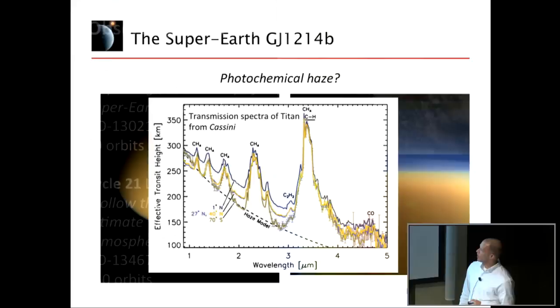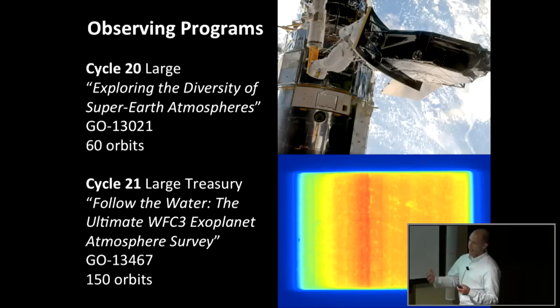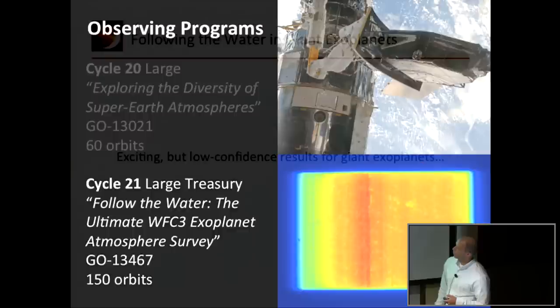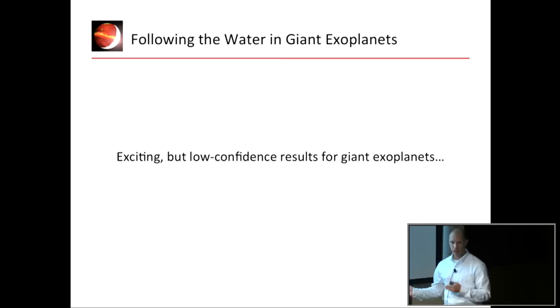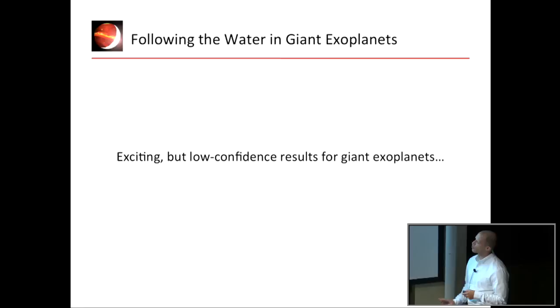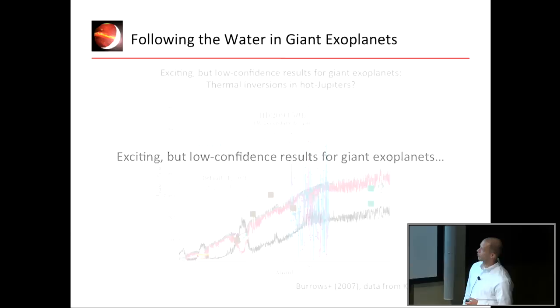I'm going to change gears now from super-Earths to giant exoplanets. My natural evolution in this field led me to next study giant exoplanet atmospheres, and in the next cycle we proposed for an intensive observational campaign to do so. To give you the groundwork — you might ask why are we going backwards from super-Earths toward giant planets — the answer is that I wanted to use this intensive campaign to obtain high-precision data to make definitive statements, because there were exciting but low-confidence previous results for giant exoplanets.